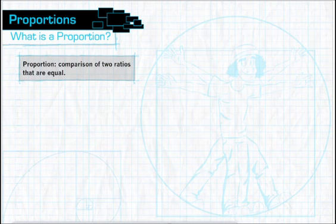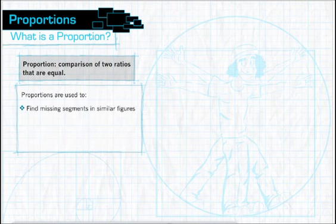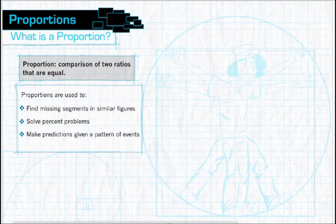A proportion is the comparison of two ratios that are equal. Proportions are used to find missing segments in similar figures, solve percent problems, and make predictions given a pattern of events.